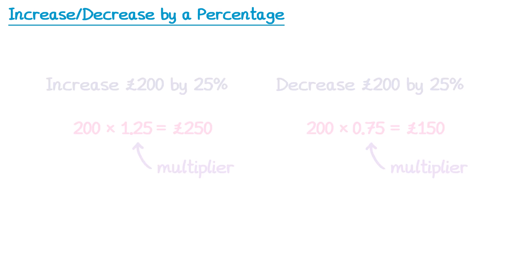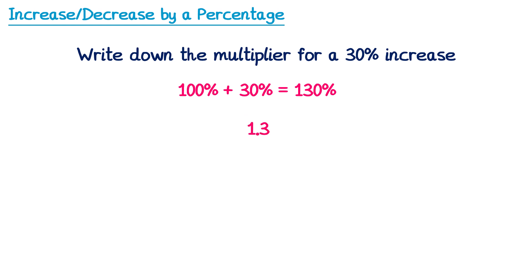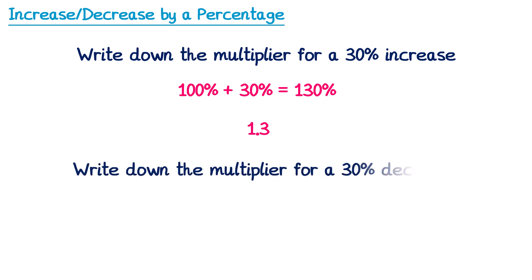Sometimes exam questions refer to multipliers. For example, a question could say: write down the multiplier for a 30% increase. We do 100% + 30% = 130%, then divide by 100 to get 1.3 — that's our multiplier. For a 30% decrease, we do 100% − 30% = 70%, divided by 100 gives 0.7. So the multiplier for a 30% decrease is 0.7.